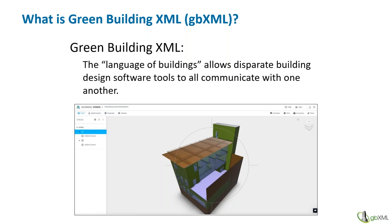BIM — building information modeling — and GBXML are complementary with one another. The whole essence of BIM is interoperability: getting the data out of the BIM and into other tools that can utilize this data. Think of GBXML as the transport mechanism that allows that data to flow from the BIM to external tools and back. GBXML is not a programming language and it is not a software tool. It is a language, an XML schema, that focuses solely on storing data about buildings.